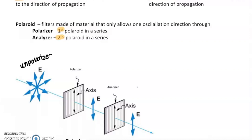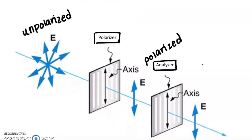Here we have unpolarized light — oscillating in all directions. We have our first polaroid called the polarizer. Out we get polarized light oscillating in just one direction. Then it goes through a second polaroid known as the analyzer. In this particular setup, the polarizer is only allowing up-and-down light through — it filters out all other directions so that you're left with polarized light polarized in the vertical direction. Our second polaroid, our analyzer, is also oriented with slits up and down, so it allows all of that vertically polarized light to come through.